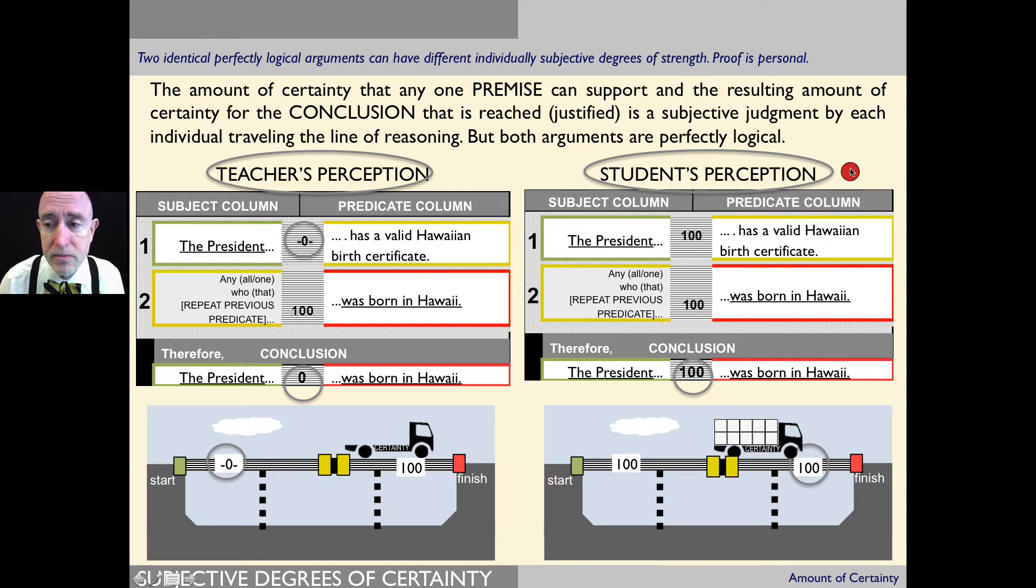So it's important to keep in mind that two rational individuals can be looking at the same logical argument and arrive at totally different conclusions about the likelihood that the factual conclusion is true. Thank you.